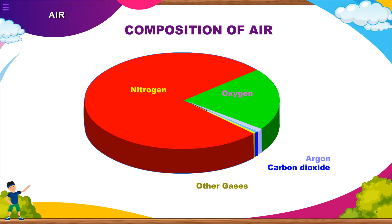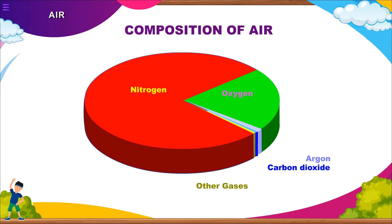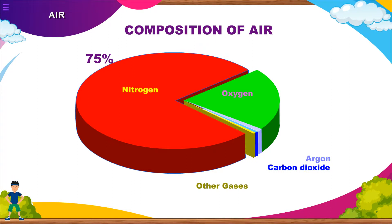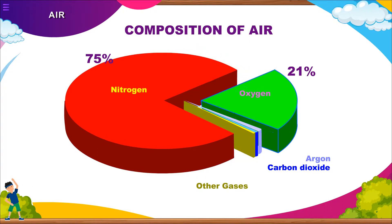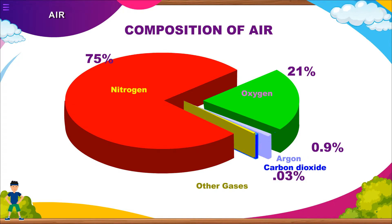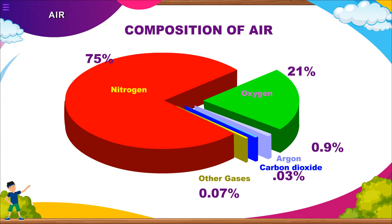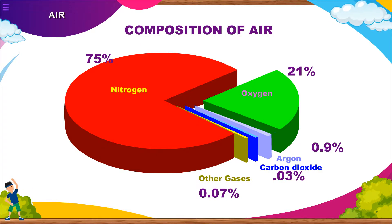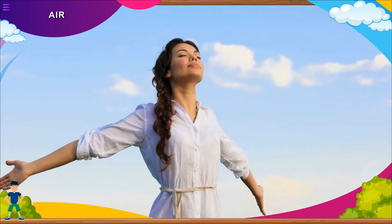Composition of air: Air is a mixture of many gases. It consists of about 78% nitrogen, 21% oxygen, 0.9% argon, 0.03% carbon dioxide, and the remaining 0.07% is a mixture of hydrogen, water vapor, ozone, neon, helium, krypton, xenon, and radon, along with dust and smoke.